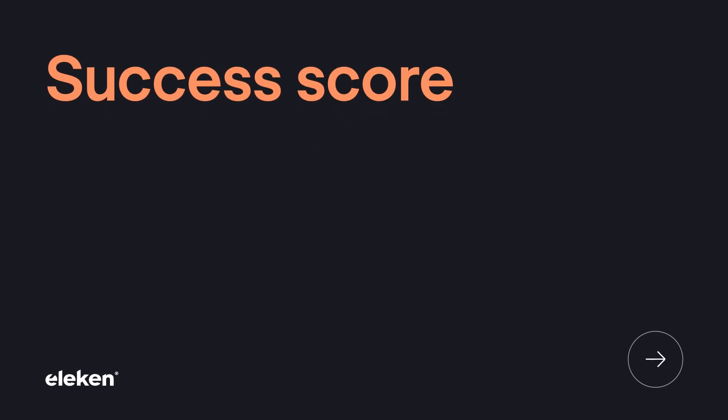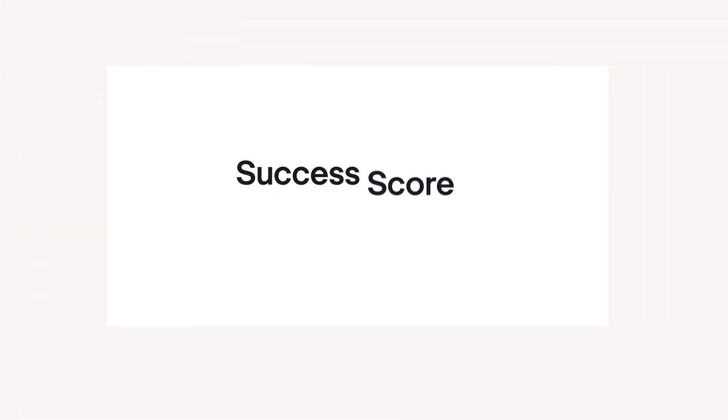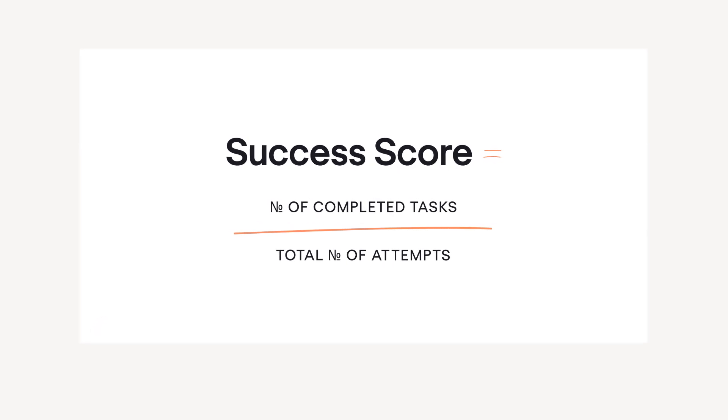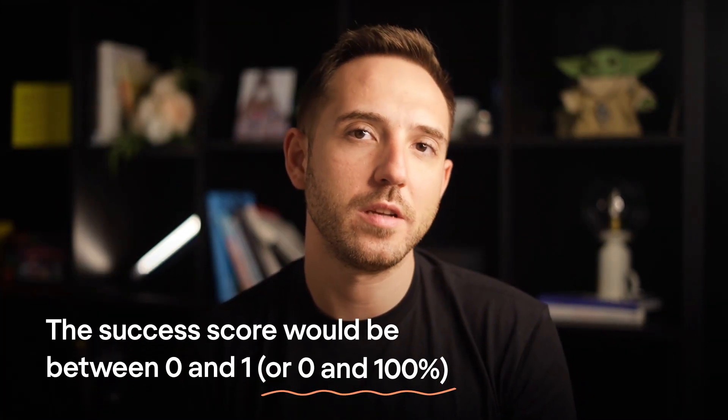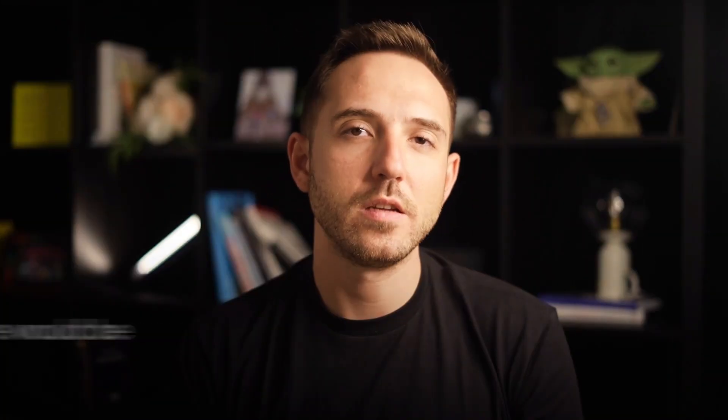Let's take a closer look at the most common usability metrics. We'll start with the metrics for effectiveness, namely the success score. It allows us to tell whether the design works at all. Success or completion means that the user managed to complete a task they were given. The basic formula for success score is the number of completed tasks divided by the number of total attempts. The success score is between 0 and 1, or 0 and 100%. In this binary system, these numbers refer to the task being completed successfully or not. All other specific situations are overlooked — partial task success is considered a failure.